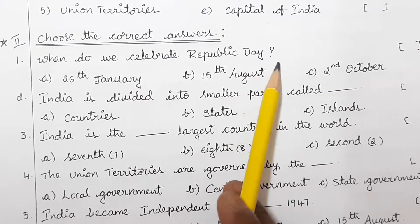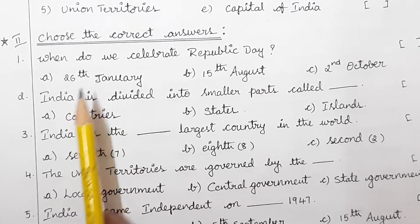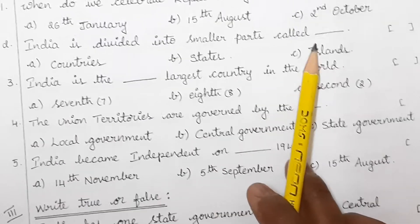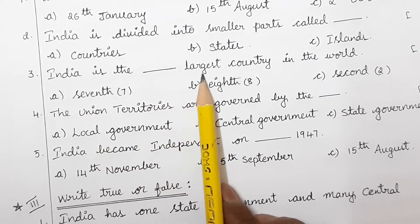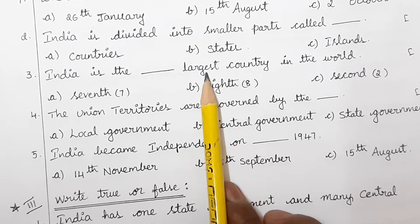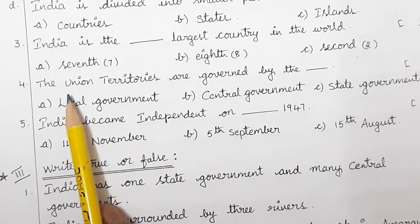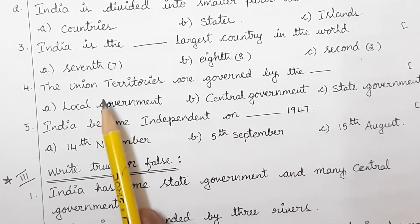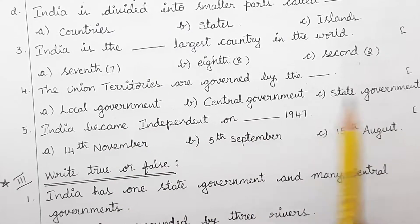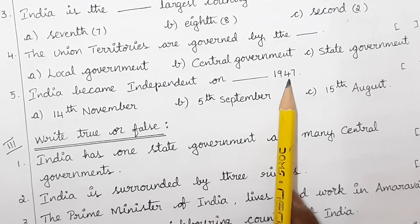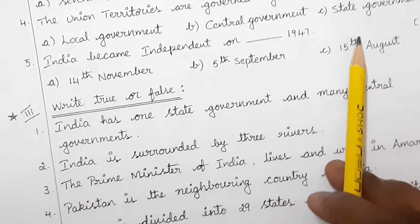Now come to 'choose the correct answers.' When do we celebrate Republic Day? On 26th January. India is divided into smaller parts called — countries, states, or islands? India is the dash largest country in the world — seventh, eighth, or second largest? Union territories are directly governed by local, central, or state government? India became independent on 14th November, 5th September, or 15th August 1947?